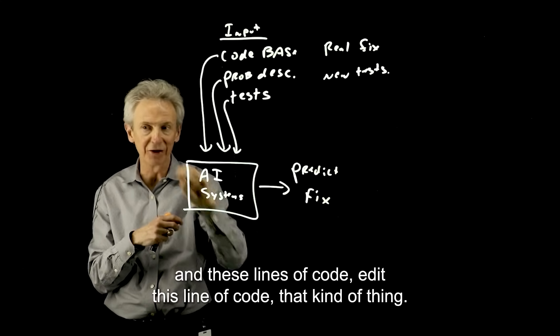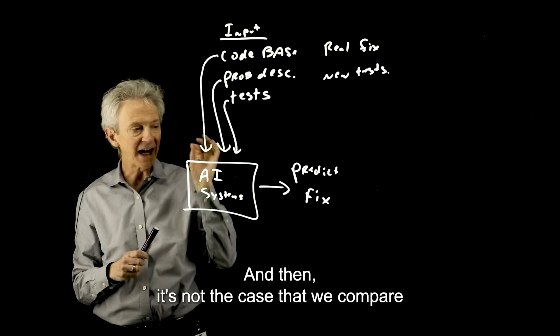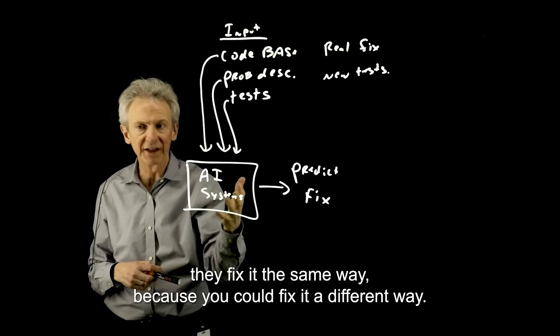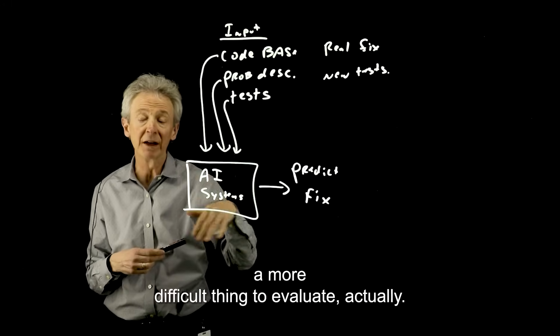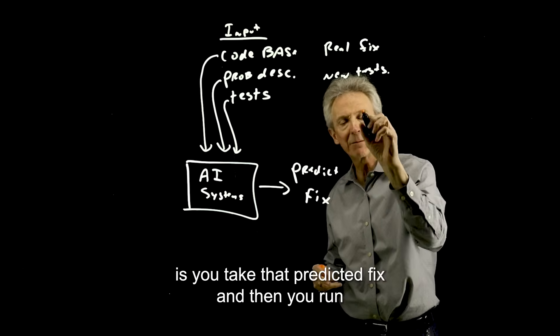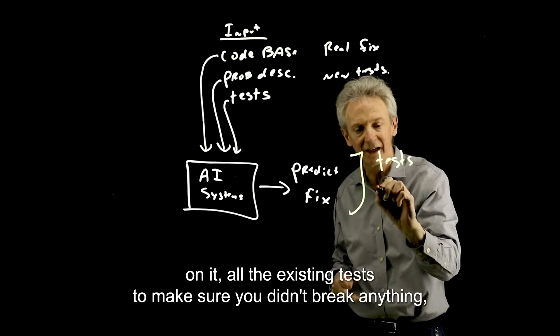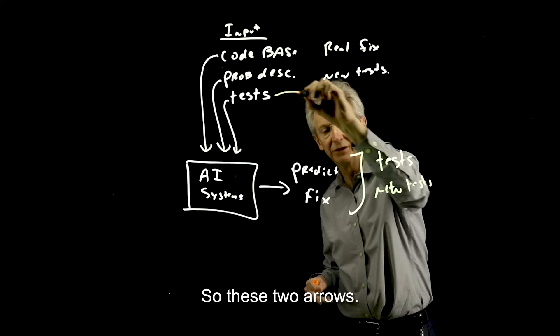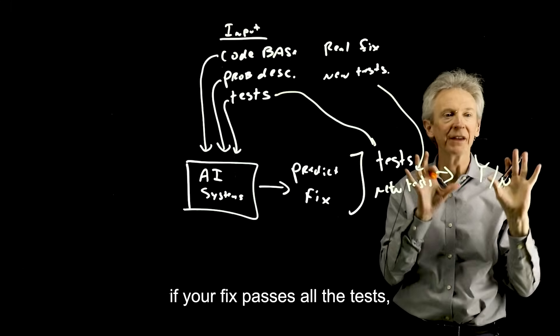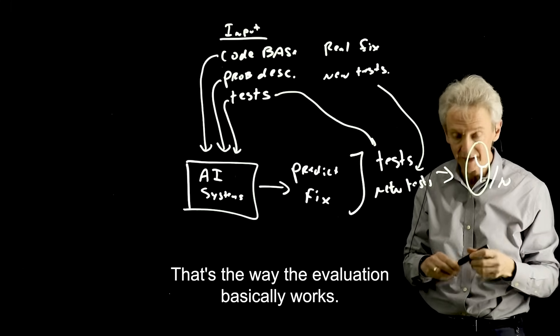So remove these lines of code, add these lines of code, edit this line of code, that kind of thing. So it's a predicted fix to this big code base. And then it's not the case that we compare the predicted fix with the real fix to make sure they fix it the same way because you could fix it a different way. You could use different variables. It's a more difficult thing to evaluate, actually. So what these environments do is you take that predicted fix, and then you run on it all the existing tests to make sure you didn't break anything, and all the new tests. And then if your fix passes all the tests, you didn't break anything, and it passes the new tests, then you have fixed the bug. That's the way the evaluation basically works.